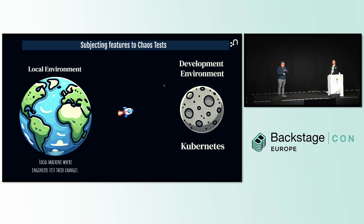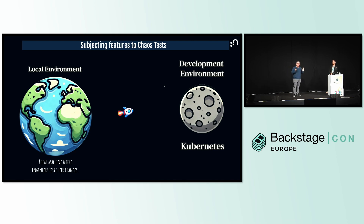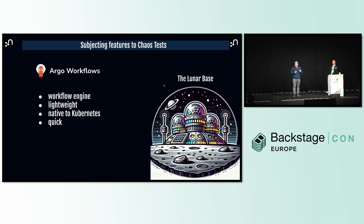We did some research over a couple of weeks and found some great chaos engineering tools, but we decided to go with an unconventional method — we decided to use Argo Workflows. You might say that wasn't created for chaos engineering, and you'd be right, but it happens to be a great tool for that.